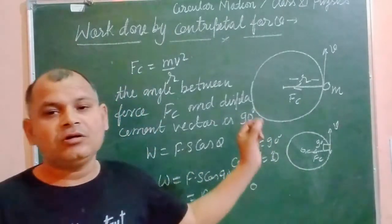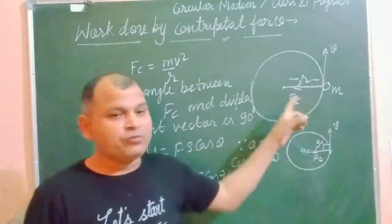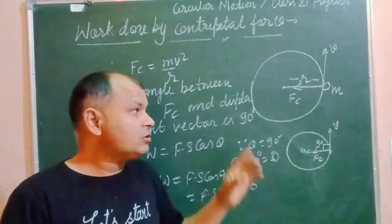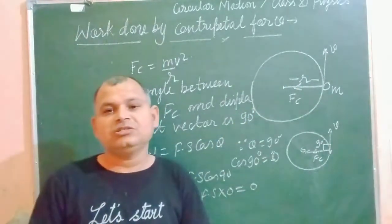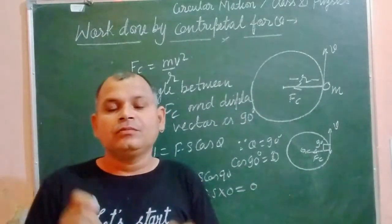So work done on a circular path moving particle is 0. Therefore there is no energy change in the particle.